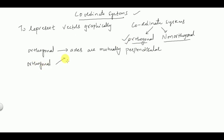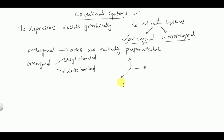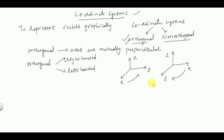The orthogonal coordinate system is further classified into two types: right-handed orthogonal coordinate system and left-handed orthogonal coordinate system. In the right-handed system, the axes are perpendicular and the direction of movement is towards the right-hand side. In the left-handed system, the axis moves towards the left-hand side.